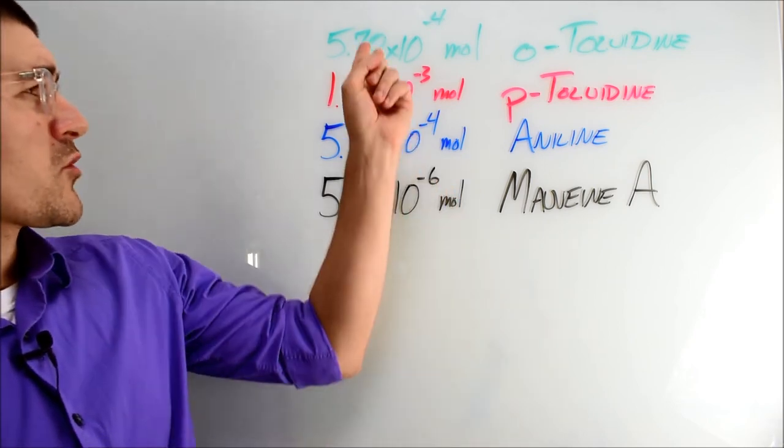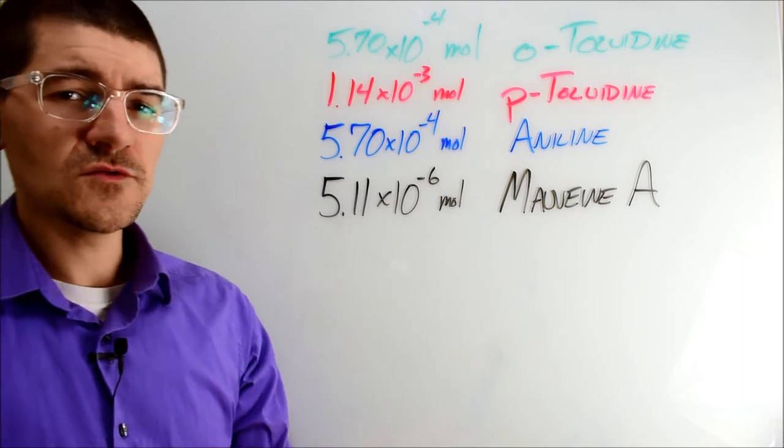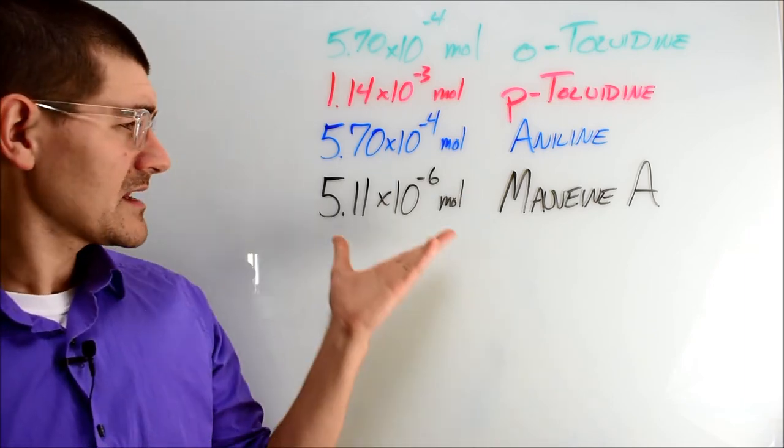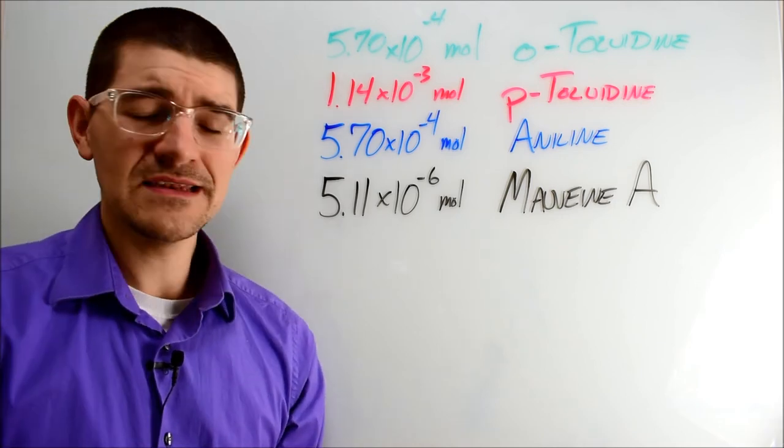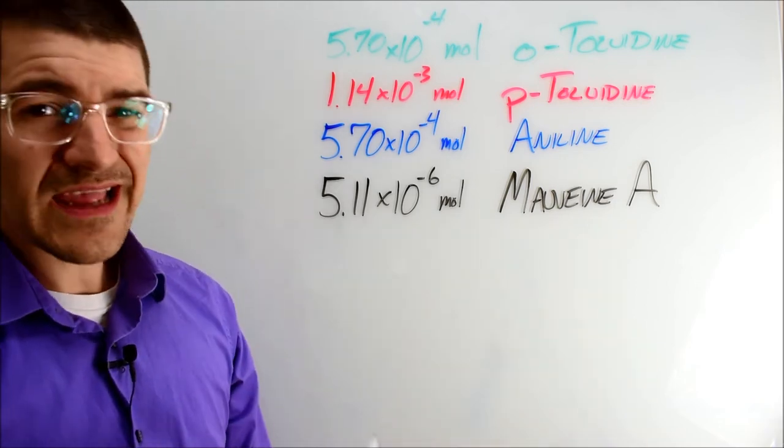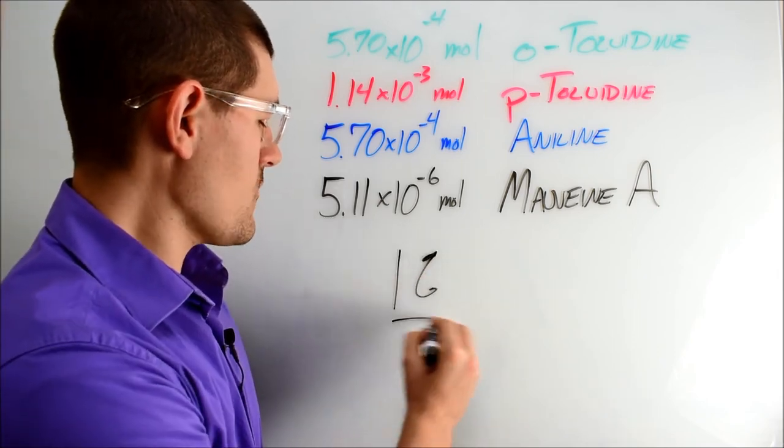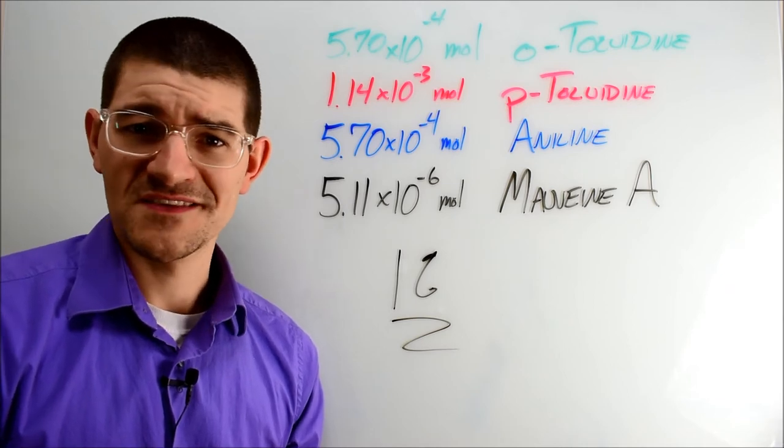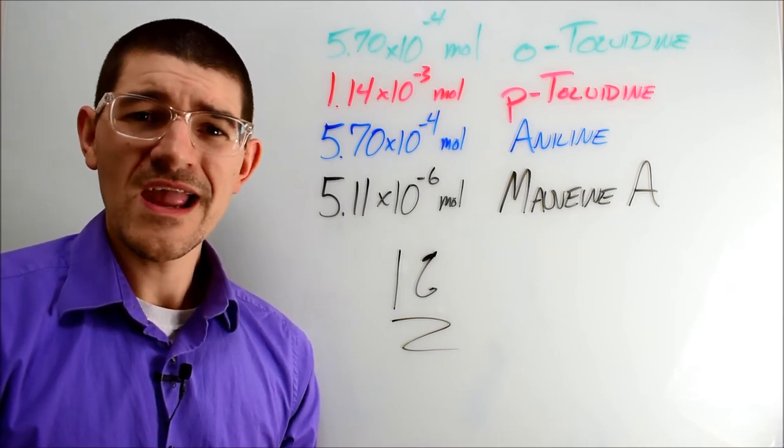On a mole basis, our Portuguese researchers maintained the 1 to 2 to 1 mole ratio of ortho-toluidine to para-toluidine to aniline, and ended up getting 5.11 times 10 to the negative 6 moles of mauveine. Using the molecular weight of mauveine A, depending how you calculate it, that percent yield is just about 1%, which is not good for a two-step one-pot synthesis.